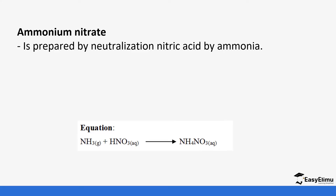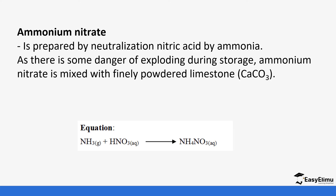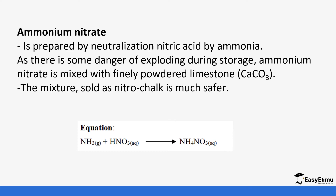Ammonia reacts with nitric acid to form ammonium nitrate, as shown in the equation. There is some danger of explosion during this stage because ammonium nitrate is very sensitive. It is important that it's mixed with calcium carbonate, which helps prevent explosion. The mixture — nitro chalk — is much safer to use than ammonium nitrate on its own.